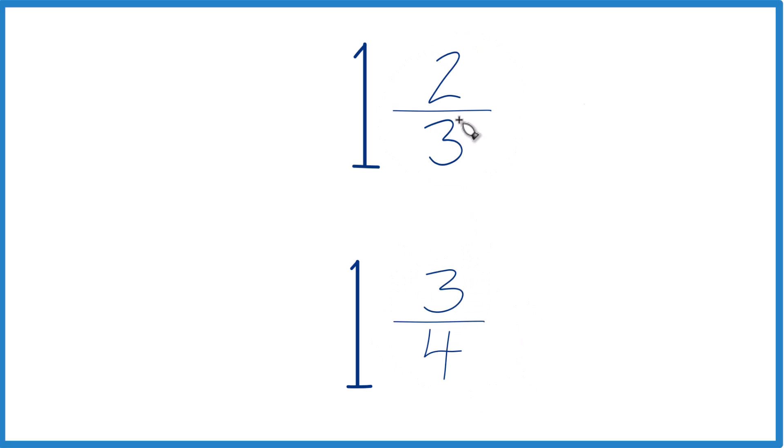And what we want to do is get the denominators here to be the same. Right now we have 3 and 4, but if those were the same, we could compare the numerators and tell whether 1 and 2 thirds is greater than, less than, or equal to 1 and 3 fourths.